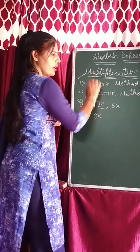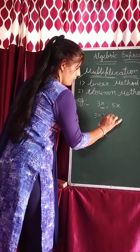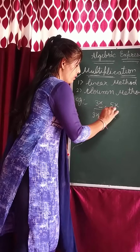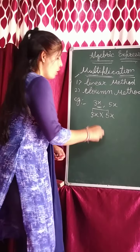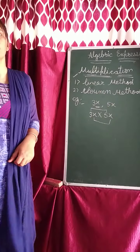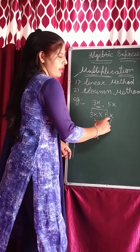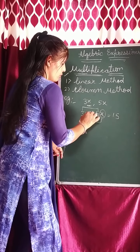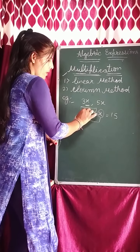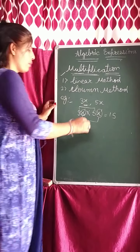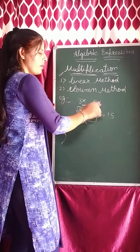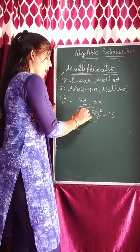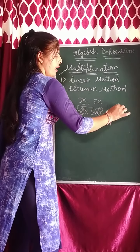3x — what do you have to do? Multiply — put the multiply sign — then 5x. What do you have to do? The constant value is multiplied with the constant, and the variable is multiplied with the variable. 3 times 5 is 15. Now multiply x with x — x has power 1 and the other x also has power 1. If power 2 is given here and power 2 is given there, what will you do? When you multiply, the powers get added together. 2 plus 2 becomes 4.